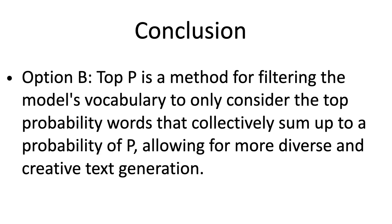This reasoning leads to Option B: top P is a method for filtering the model's vocabulary to only consider the top probability words that collectively sum up to a probability of P, which allows for more diverse and creative text generation. This is the correct answer.